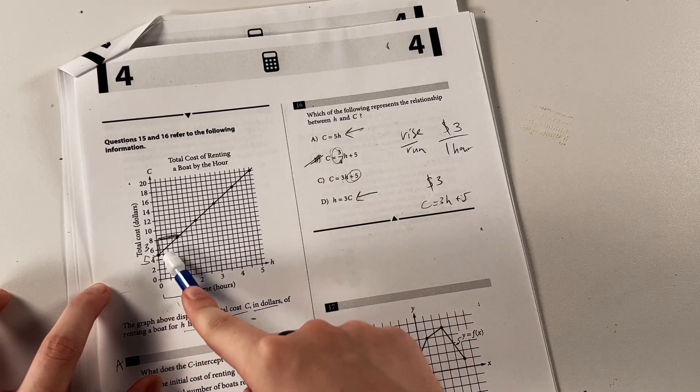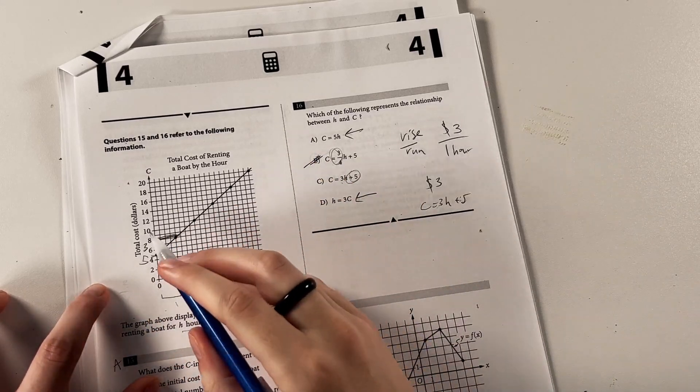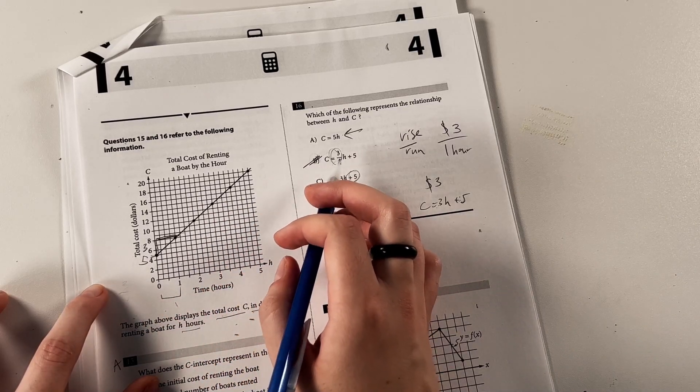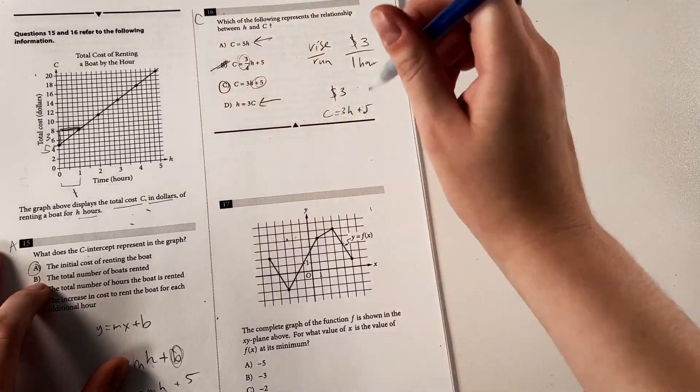In double-checking yourself, make sure that's a realistic value. What caught me off guard when I got the wrong answer is a boat would not cost $0.75 per hour of renting it. That is so cheap. So c is our answer for that one.